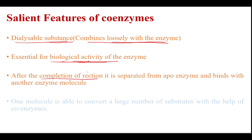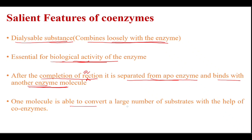After the completion of the reaction, the coenzyme is separated from the apoenzyme and binds with another enzyme molecule. So coenzymes bind to the apoenzyme until the reaction is completed, then move on to another enzyme molecule. One enzyme molecule is able to convert a large number of substrates into products with the help of these coenzymes.